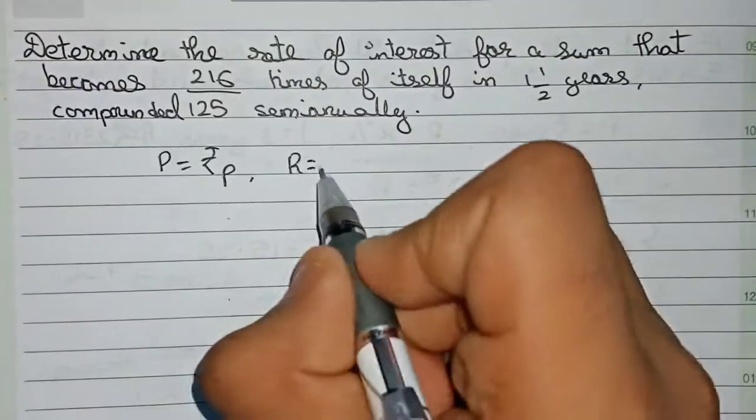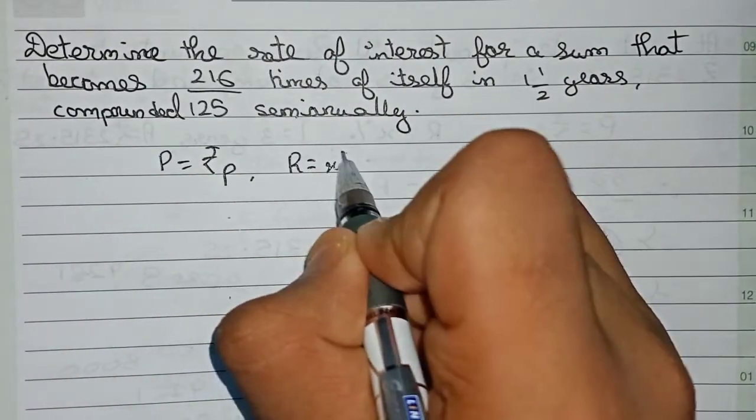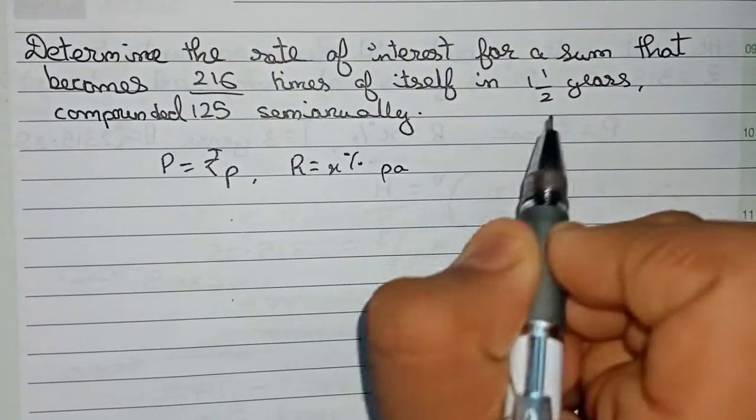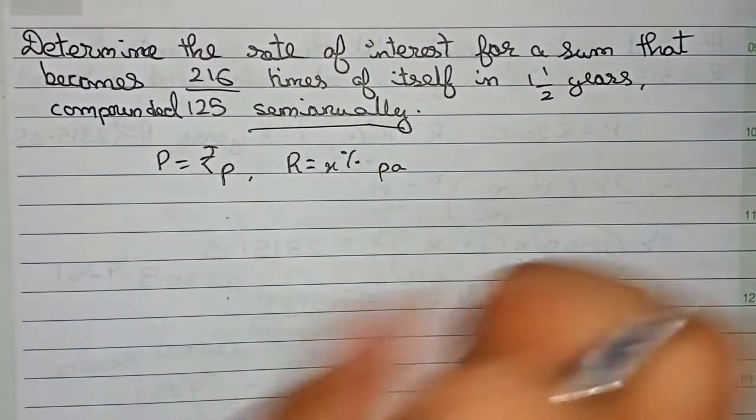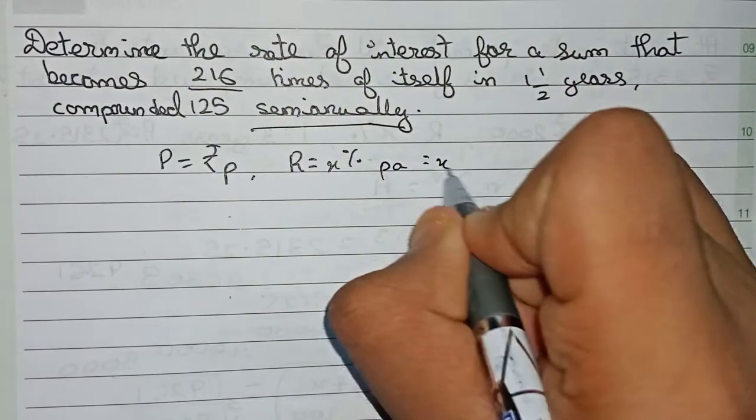Rate of interest is given nothing, so that's x percent per annum. Since it is given semi-annually, semi-annually means we divide the rate of interest by 2, so it will become x by 2 percent per half year.